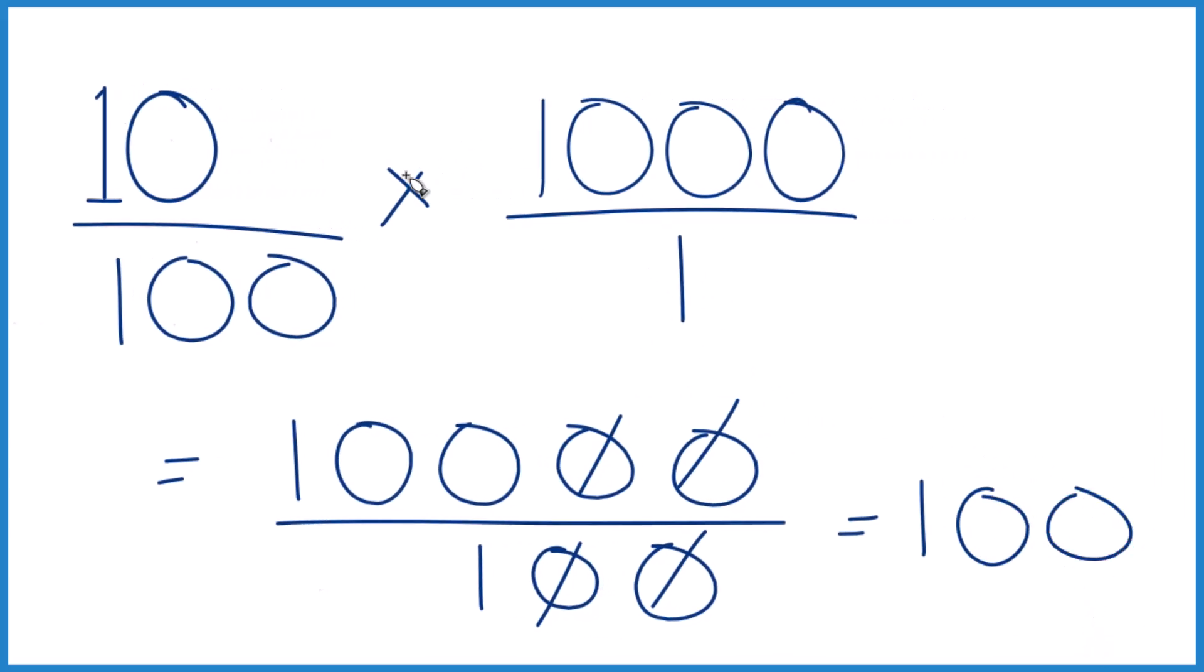You could also do it this way. You could take 10 divided by 100, get 0.1, and then multiply that by 1,000, and you get 100 as your answer. It's Dr. B taking 10% of 1,000. Thanks for watching.